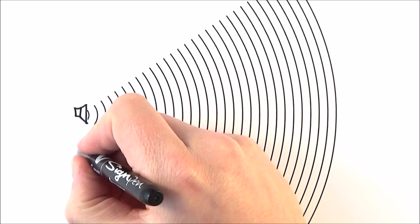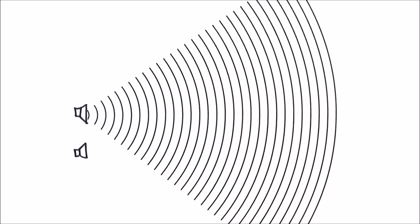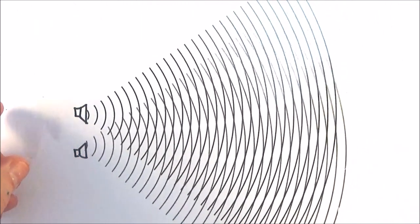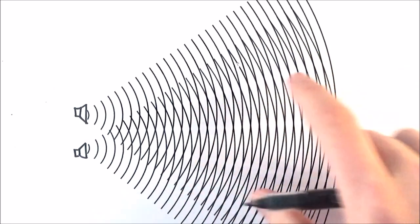Now perhaps we might think, well that's all very good, but what would happen if we had two speakers playing exactly the same note at the same volume? Well what we'd get then is another set of waves being emitted by a second speaker and what we have over here is a lovely pattern as these things fan out and what we have are points where we have constructive interference and destructive interference.